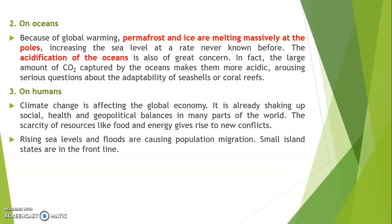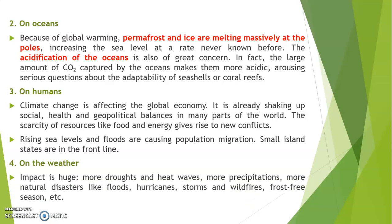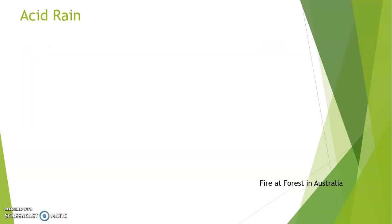Rising sea levels are causing floods and population migration. Small island states are in the front line. The impact on weather is really huge — there are more droughts, heat waves, more precipitation, and more natural disasters like floods, hurricanes, storms, wildfires, and frost-free seasons. Recently we had such events in Orissa. There are so many difficulties we are facing in today's world.